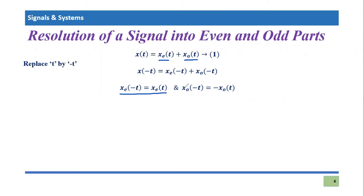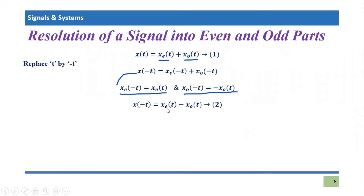By putting these equations into the above equation, it will simplify and become x(-t) = x_e(t) - x_o(t). I hope everybody can follow. Now we have two equations: equation number one, which was the original signal,